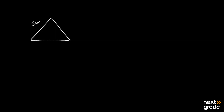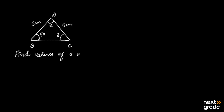Now, it is also possible that you are given a different type of figure. In a triangle, we have two sides both equal to 5 cm, one angle equal to 50 degrees, and we label the triangle A, B, C. One angle is marked Y and another angle is marked X. You are asked: find the values of X and Y.